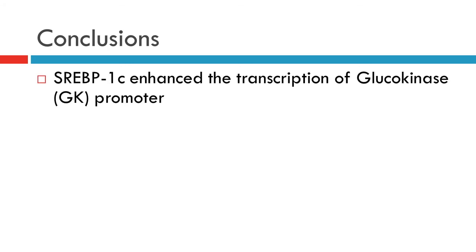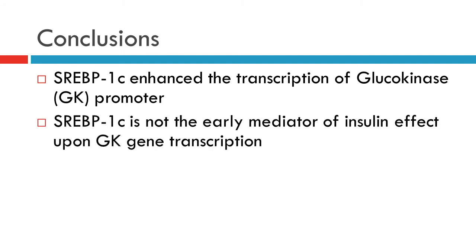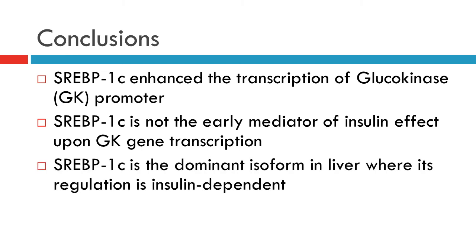In conclusion, SREBP1C enhanced transcription of the GK promoter in a dose-dependent manner. Other factors could be essential for induction of GK gene transcription. SREBP1C is not the early mediator of insulin effect upon GK gene transcription. Induction of GK gene expression by insulin could occur in the absence of mature SREBP1C. SREBP1A and SREBP1C derive from the same gene and both appear to regulate lipogenic gene transcription. SREBP1C is the dominant isoform in the liver, where its regulation is insulin-dependent.